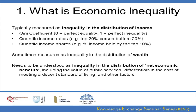First, what is economic inequality? It's typically measured as inequality in the distribution of income, and less commonly as inequality in the distribution of wealth. Not every country has those statistics. The Gini coefficient is a summary statistic showing the overall level of inequality in a given country — a score of zero indicates perfect equality, a score of one indicates perfect inequality, when one person has all the income.